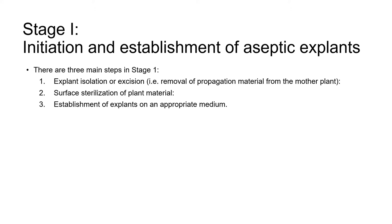In stage one there are three main steps. The first step is explant isolation or excision — a fancy way of saying that propagation material is collected from the mother plant. Secondly, the plant material collected is surface sterilized, and thirdly it's established in vitro on an appropriate medium. So let's take a look at these three steps.